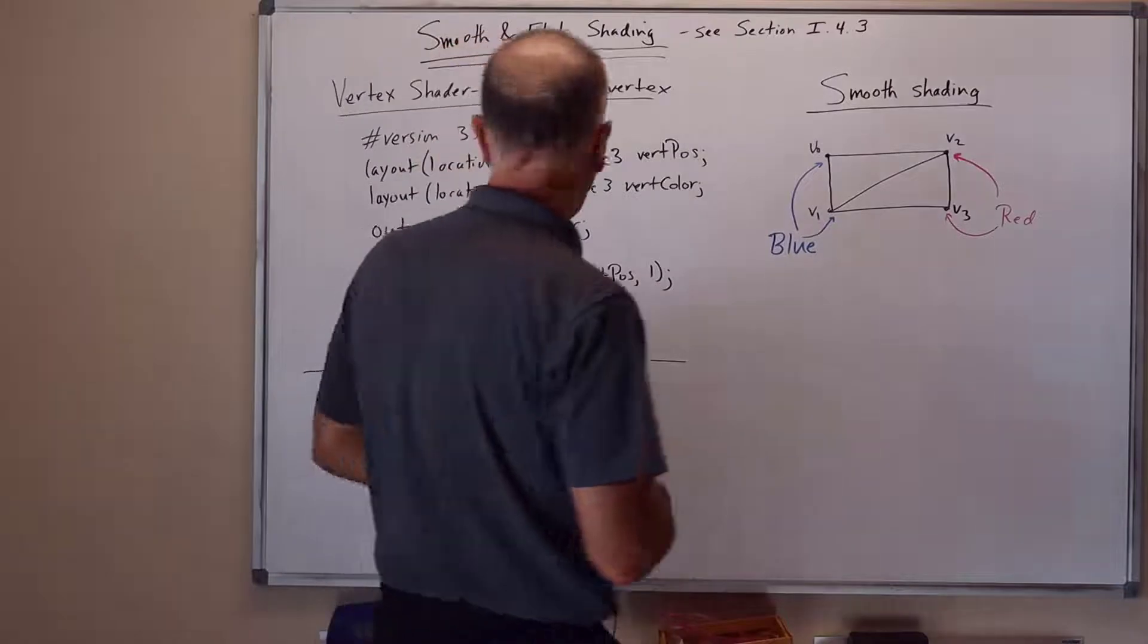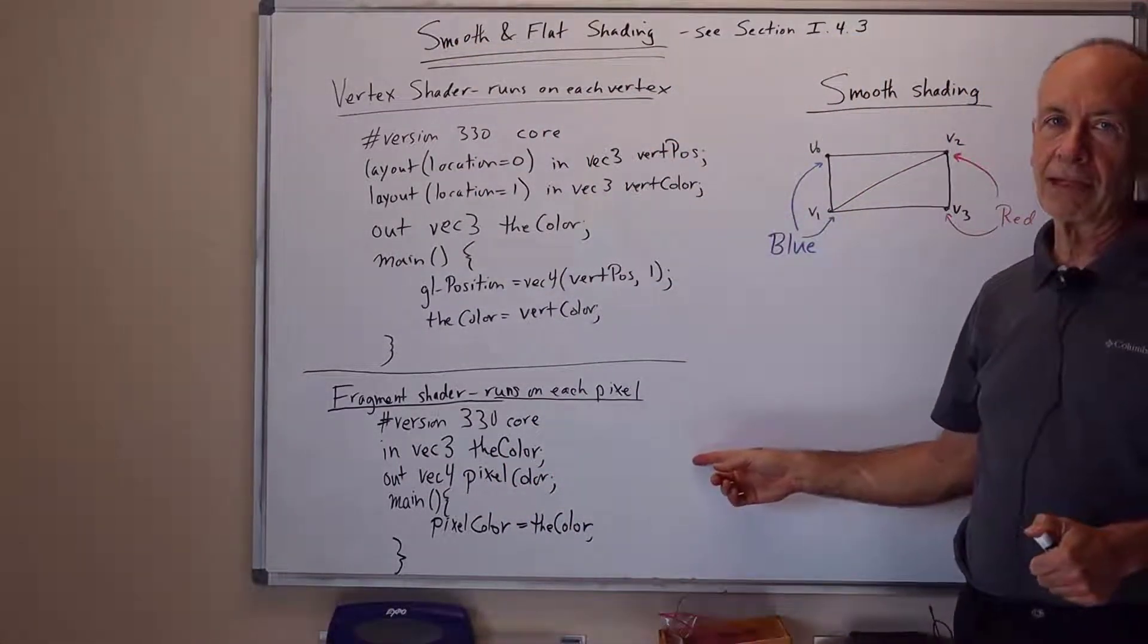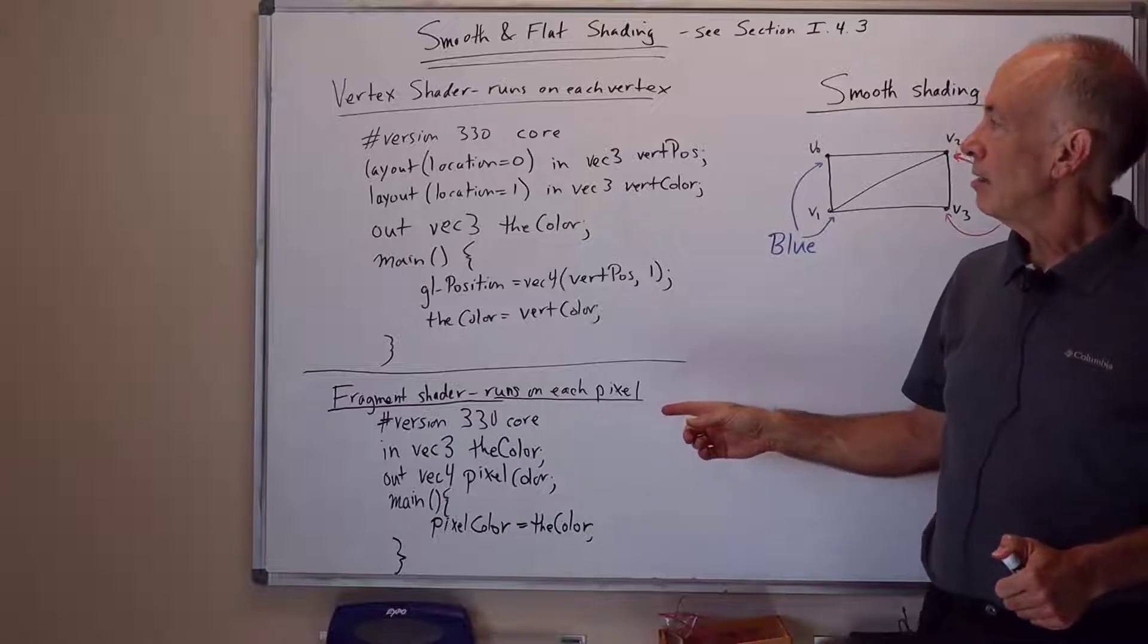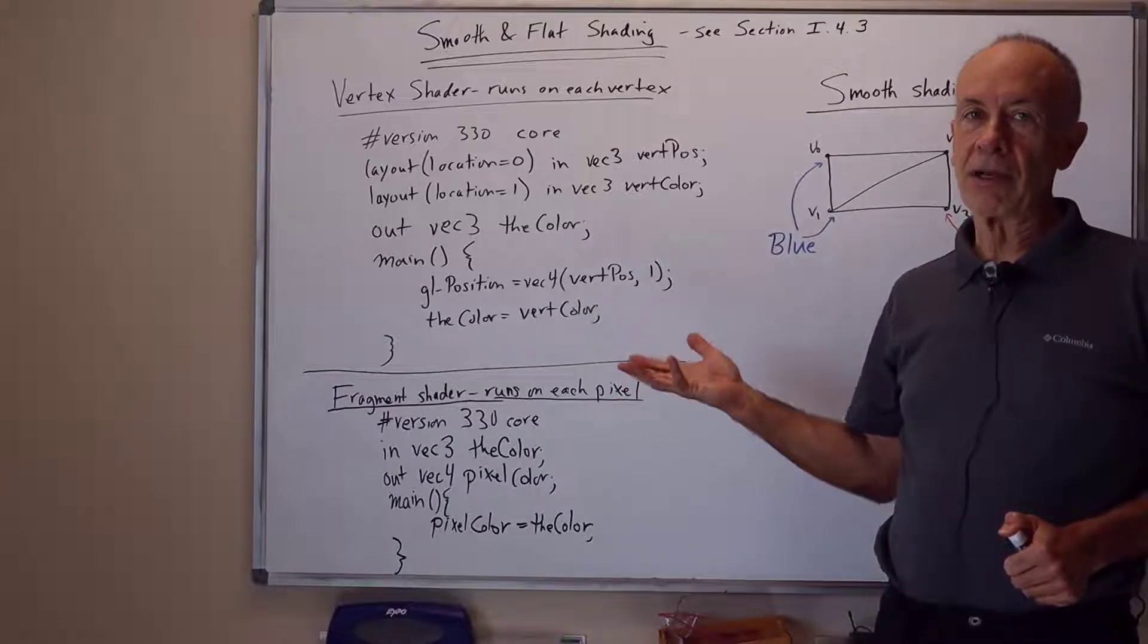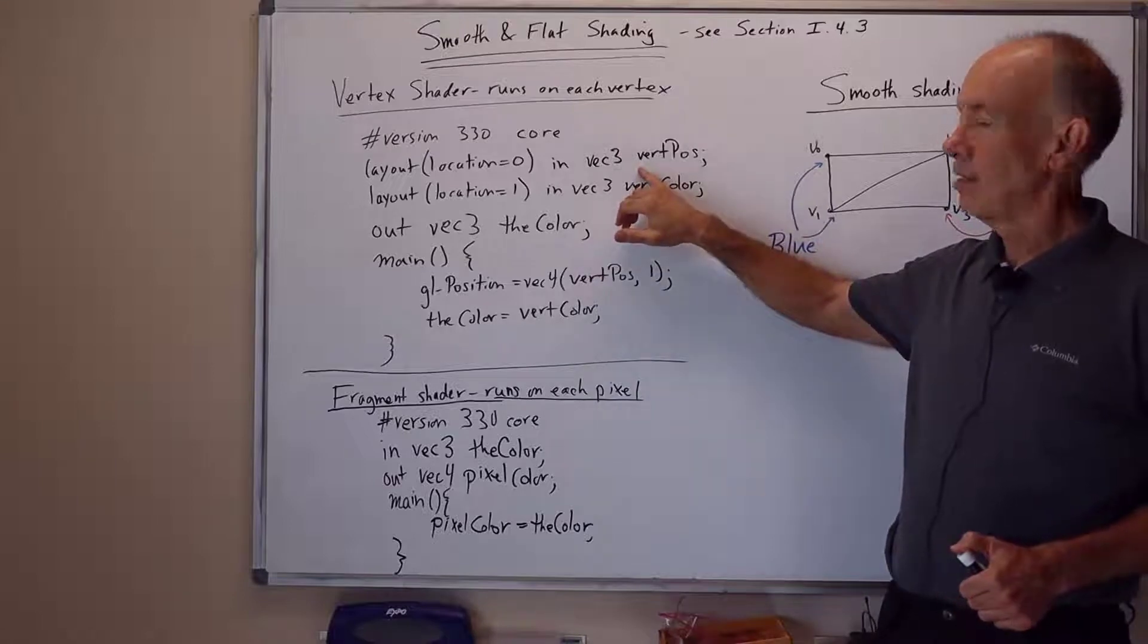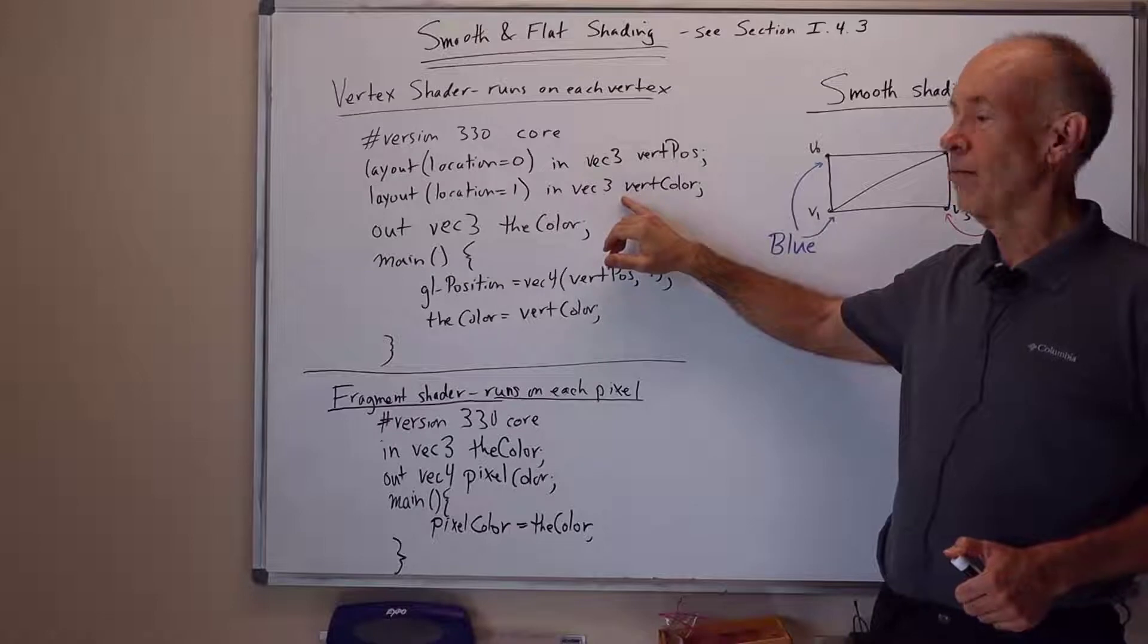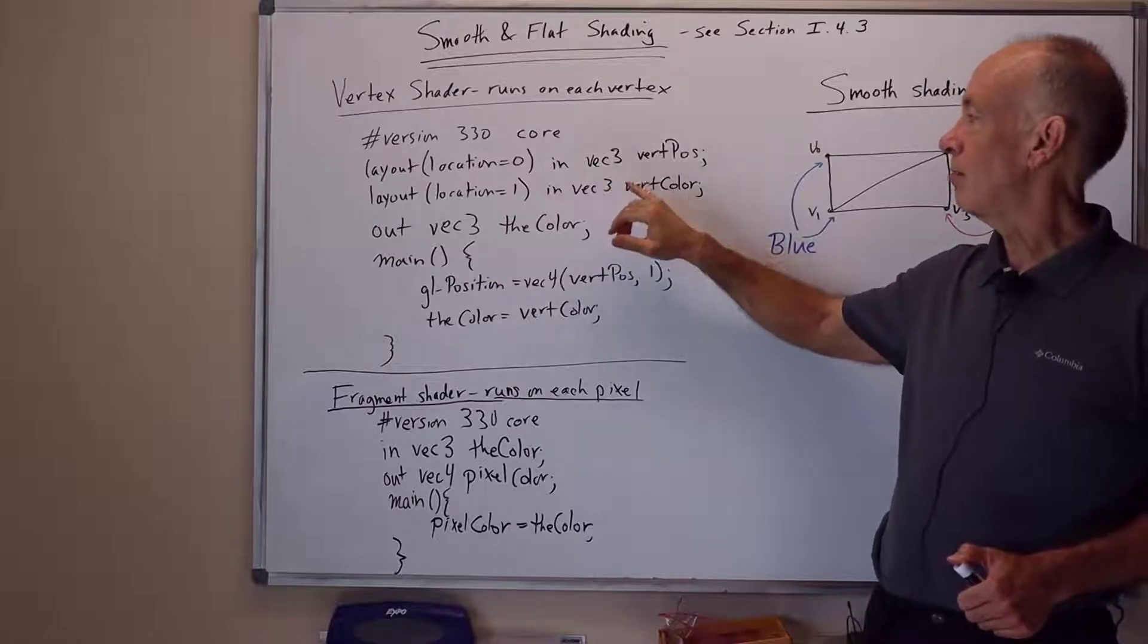I've already written on the board for you a copy of a vertex shader and a fragment shader, very simple, that render triangles with colors on the vertices. The vertex shader has an input, which is the vertex position, and a second input, which is a vertex color. They're both VEC3s.